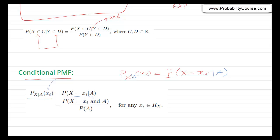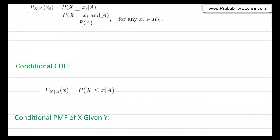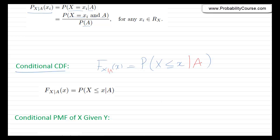To find this, we just use the formula for conditional probability: it equals probability that X equals x_i and A, divided by probability of A. Similarly, we can have a conditional CDF. The conditional CDF of X given A is the probability that X is less than or equal to x, given that event A has occurred.